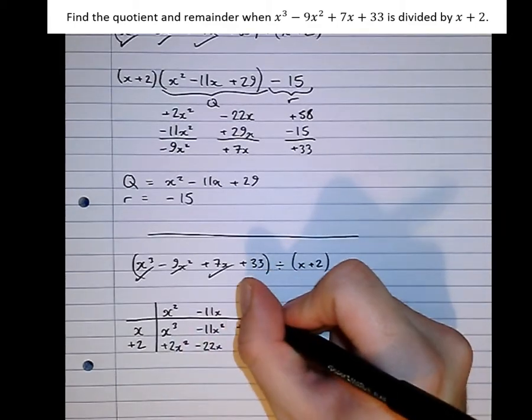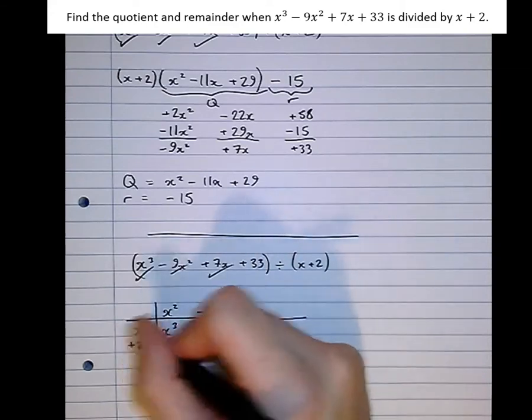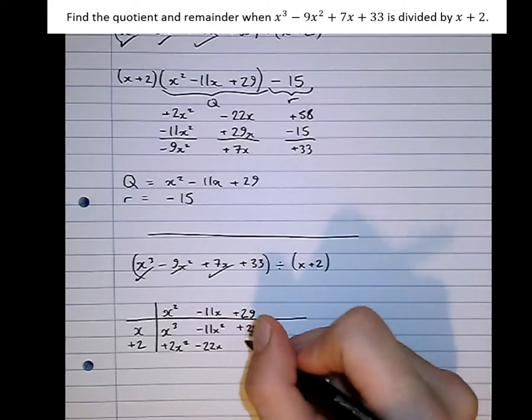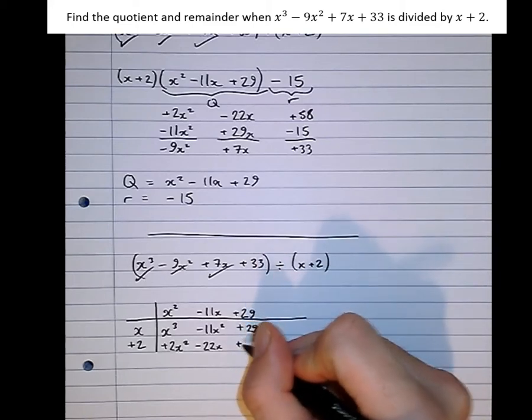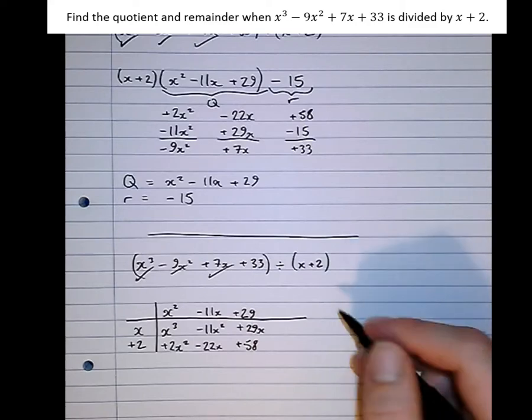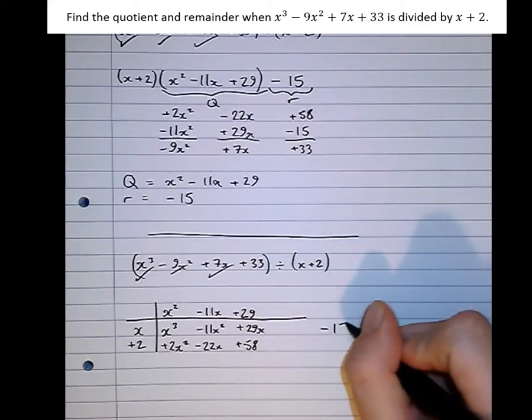So what we need now is the number there that allows us to make 29x. Well, x times plus 29 is 29x. But that gives us here an extra plus 58. So on the outside, we're going to adjust for that. So we actually need plus 33. So if we take 15 on the outside.